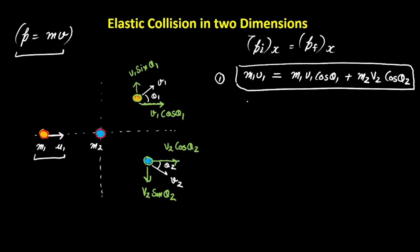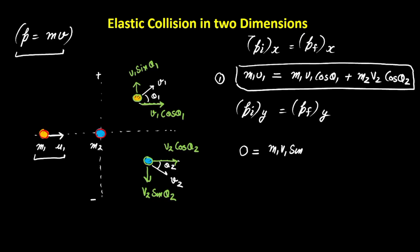For equation number 2, the initial momentum in the y-direction equals the final momentum in the y-direction. Since the first ball is only moving horizontally and the second ball is at rest, the initial y-momentum of the system is 0. The final y-momentum is m1·v1·sin(theta1) minus m2·v2·sin(theta2), giving us our second equation.